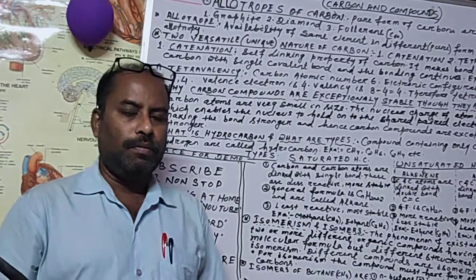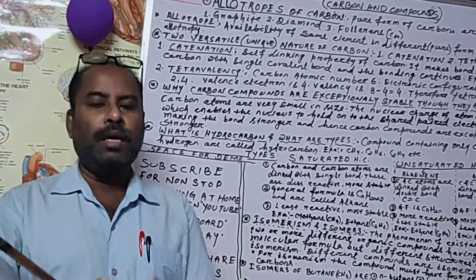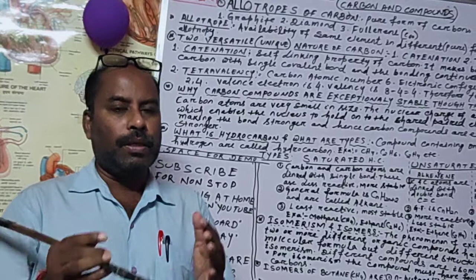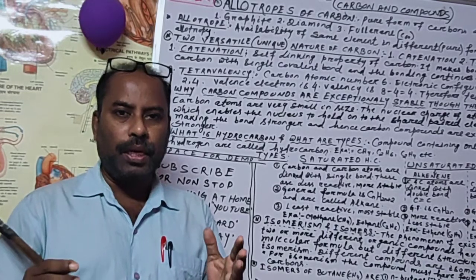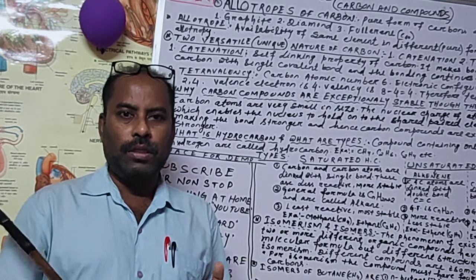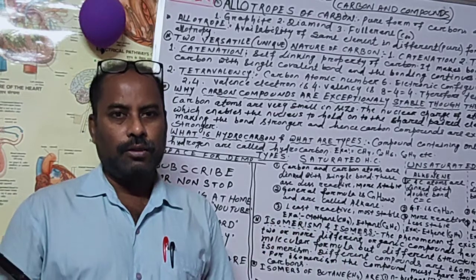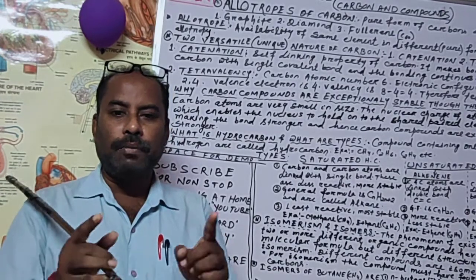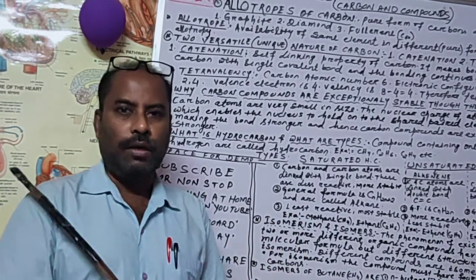What are allotropes of carbon? Allotropy means the same element is available in nature in different pure forms. That different form is called an allotrope, and this nature of the element is known as allotropy. For example, like a Hindi or English film with a double role — the same person plays different roles but the person is the same. Similarly, carbon is available in three different pure forms.